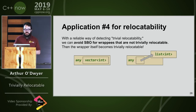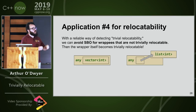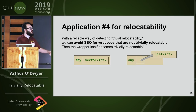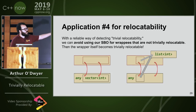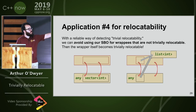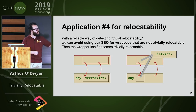Application number four for relocatability: with a reliable way of detecting trivial relocatability, we can avoid the small buffer optimization for wrappees that are not trivially relocatable. So if I'm implementing std::any, I can say I have a big small buffer — it can actually put a std::vector right there in the SBO. Now, a std::list would also fit into my small buffer, but I'm going to choose not to do that. Because list isn't trivially relocatable, I'm just going to heap-allocate it and keep a pointer to it. What this means is that now my any itself is trivially relocatable — no matter what it holds. If it holds an object in this SBO, that object itself is trivially relocatable. If the object were not trivially relocatable, I would have it out on the heap, and I have a pointer which is trivially relocatable.